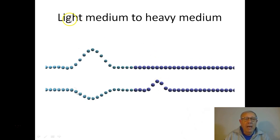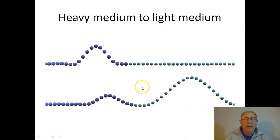So that's from a light medium to a heavy medium but if we have a look now at what happens when we've got a heavier medium, a pulse coming from a heavier medium to a lighter medium. You can see here the pulse is arriving here at the boundary and what we have then is some reflection.